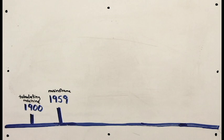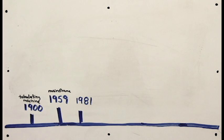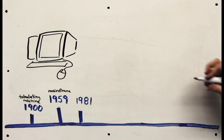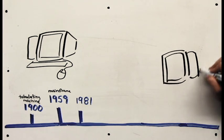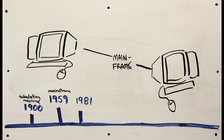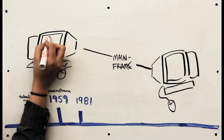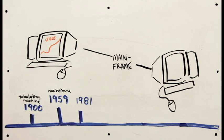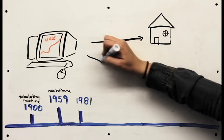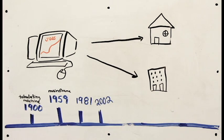While mainframes were great, they weren't really useful for everyday use due to their size and their price. However, in the early 80s, IT infrastructure evolved again with the introduction of the personal computer. Personal computers were also programmable, so the number of jobs they could do skyrocketed. As they became smaller and more affordable, they began popping up in more and more homes and businesses. By 2002, personal computers had become a staple piece of equipment in almost all workplaces.